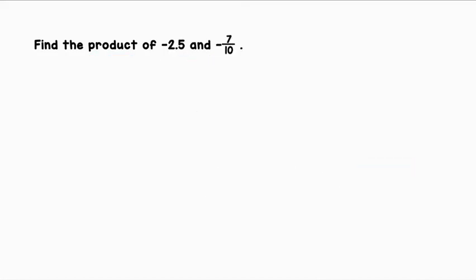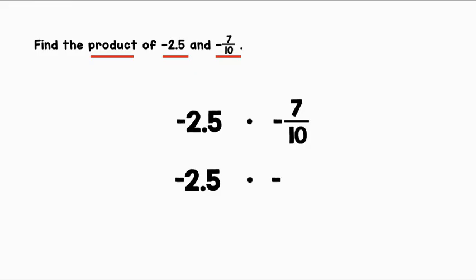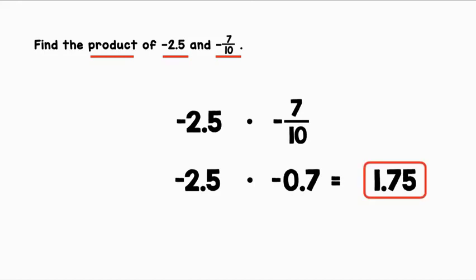Find the product of negative 2.5 and negative 0.7. The word product indicates multiplication. Our two values are negative 2.5 and negative 0.7. We have one decimal and one fraction, so let's make sure they're both in the same form — I'm going to convert the fraction to decimal form. We have negative 2.5 times negative 0.7, since 7 divided by 10 is 0.7. When we multiply these two numbers together, we get 1.75. Our answer is positive because a negative times a negative equals a positive.